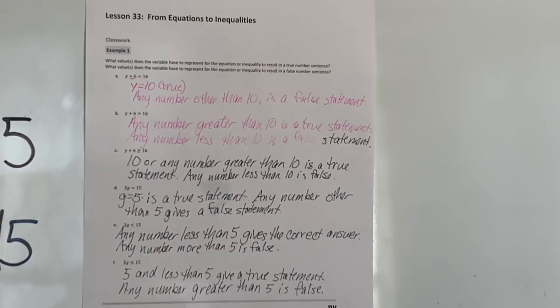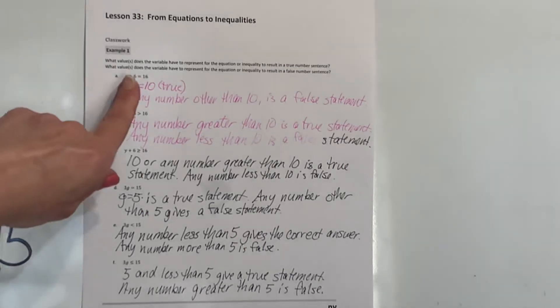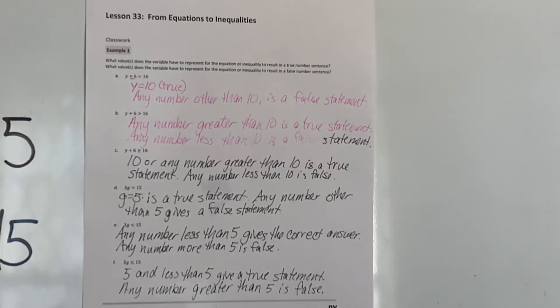You're starting to see how these inequalities work. When we have an equal sign there's going to be one value that's the correct answer — everything else makes a false statement. If we have greater than or equal to, less than or equal to, greater than, or less than signs, there will be multiple answers that can make the statement true. Go ahead and get example two — if you need to rewind and watch some of this again, you can do that.